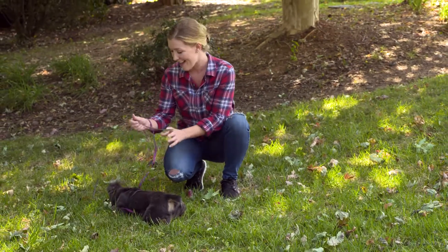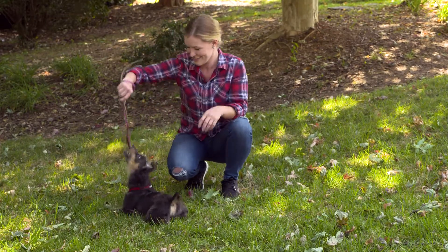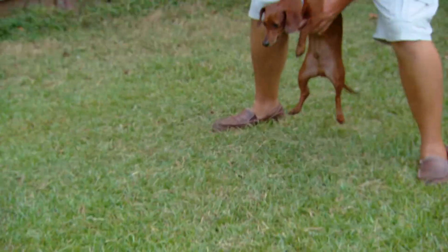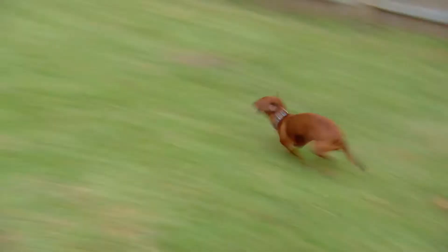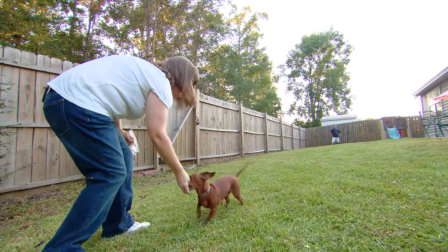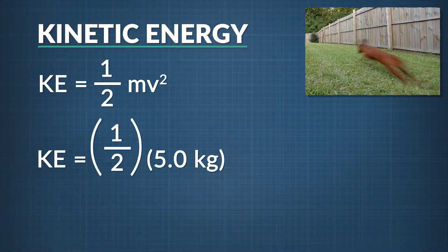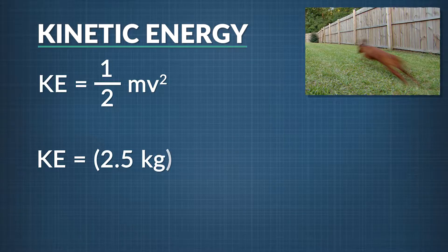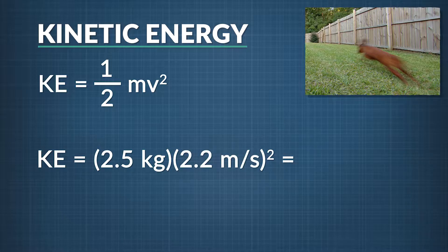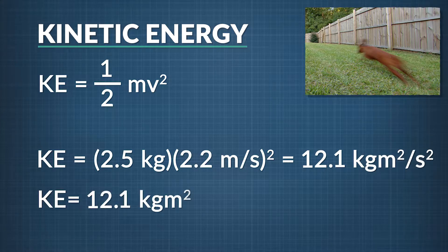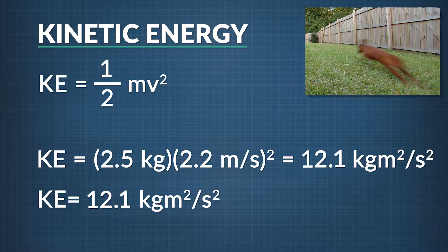This little puppy, Sage, has a lot of kinetic energy. Let's say our 5.0-kilogram puppy is moving at 2.2 meters per second. To figure out his kinetic energy, you take one-half his mass — 2.5 kilograms — times his velocity, 2.2 meters per second, squared. That gives 12.1 joules. So our answer is 12.1 joules — that's the kinetic energy of the little puppy.